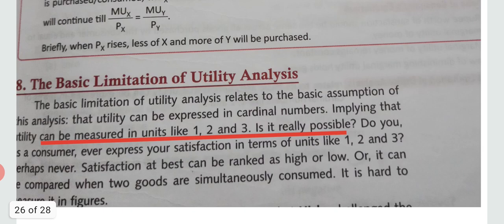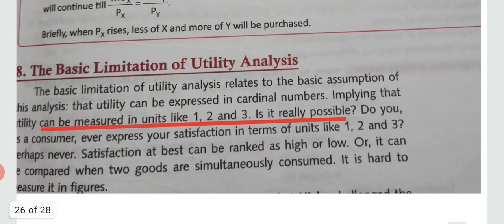Now we move to the limitations of utility analysis. The first limitation is that Marshall claimed utility can be measured in cardinal numbers, but this is not possible in practice. You cannot say consuming one cup of tea gives exactly five utiles and the second gives four — satisfaction cannot be expressed in numbers. It can only be ranked as high, medium, or low.